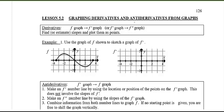This is lesson 5.2 and we're going to do some more graphing today, but this time we're going to graph out derivatives and something called an anti-derivative from graphs. Let's focus on the derivative part first. If I give you an f graph or the original function, I want us to be able to figure out what the derivative graph looks like — the slope graph. We're going to use the idea that a derivative is really just a slope.